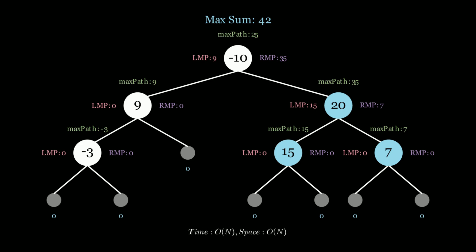This algorithm runs in O(n) time and O(n) space. O(n) time because we iterate through every node once, and O(n) space because of the recursive call stack. If this were a skewed tree we would have n recursive calls on the stack.